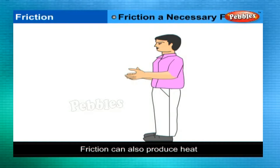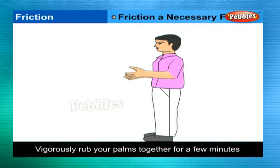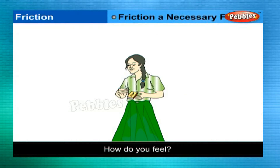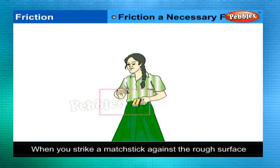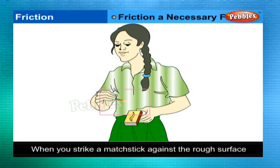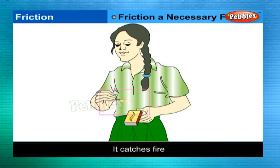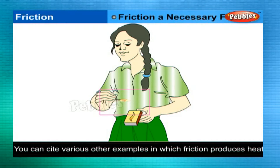Friction can also produce heat. Vigorously rub your palms together for a few minutes — how do you feel? When you strike a matchstick against a rough surface, it catches fire. You can cite various other examples in which friction produces heat.